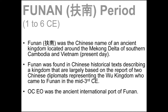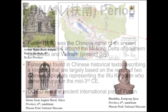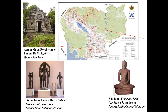Funan was found in Chinese historical texts describing a kingdom that is likely based on the reports of two Chinese diplomats representing the Wu kingdom who came to Funan in the mid-3rd century. At the time, Oc Eo was the international ancient port of Funan. As a result of contact with Indians, they introduced Buddhism and Hinduism. The Buddha and Vishnu statues and temples were built according to the Indian style for the first time — this is the Indian introduction to Cambodia.